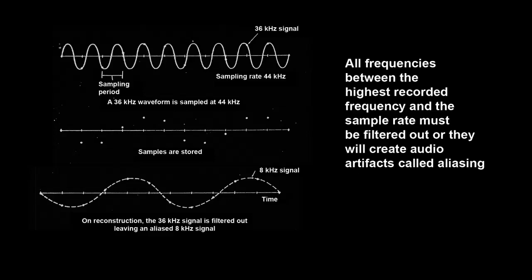In this example, a 36 kHz signal was not filtered out and sampled at 44 kHz. Because there are not two samples per period, the waveform is folded down into the audio spectrum and is perceived as an 8 kHz signal.